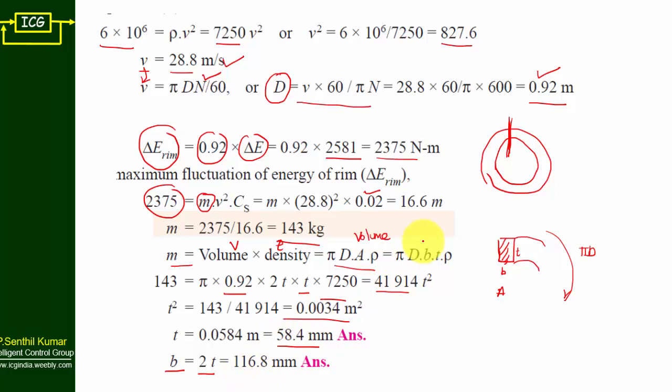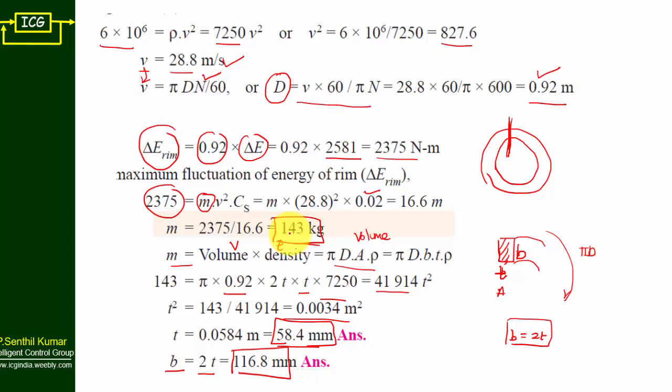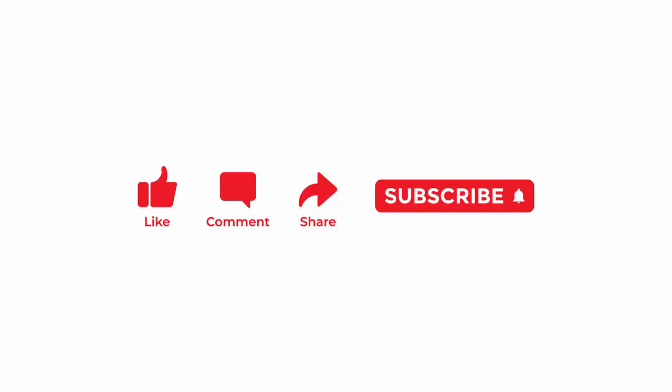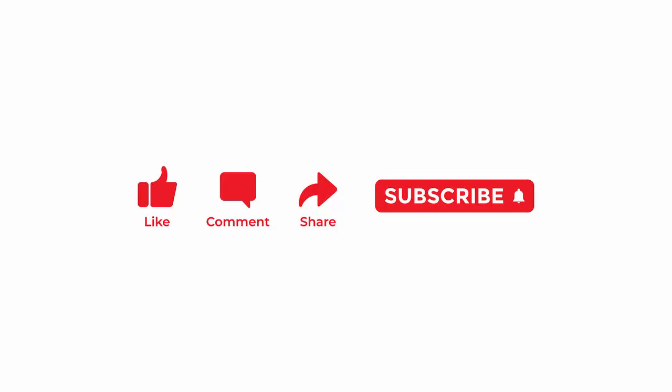So the final answers are: thickness = 58.4 mm, breadth = 116.8 mm, and mass = 143 kg. These are the dimensions of the given flywheel. This is how you use the turning moment diagram and all parameters to find the various dimensions of a flywheel. Post your questions in the comment box and mention topics you expect from this channel. Please subscribe and like the video to support these lectures.